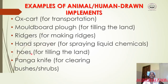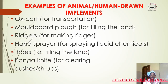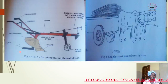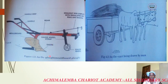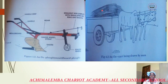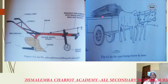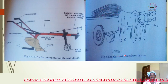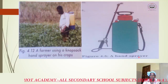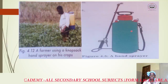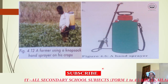Other human-drawn implements include hoes for tilling the land and pangas for clearing bushes and shrubs. Here are pictures of animal-drawn implements: an ox mould board plow, and an ox cart transporting hay — driven by oxen. There is also a picture showing a hand sprayer with a tank, a pipe, and a nozzle where the chemicals come out.